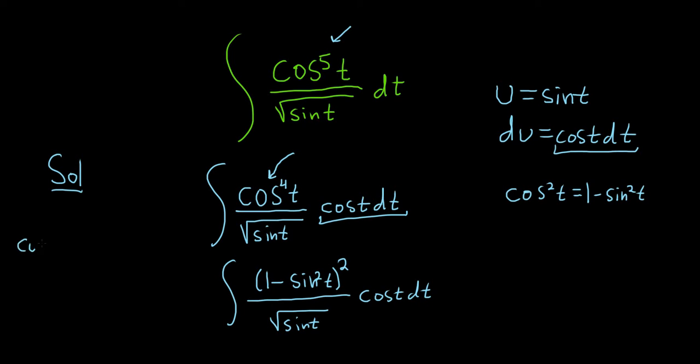And hopefully this makes sense, because if you have cosine to the fourth of t, you can write it as cosine squared t squared. And then you see you replace the cosine squared with 1 minus sine squared. So we end up with this.